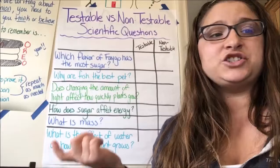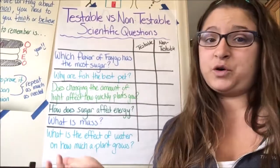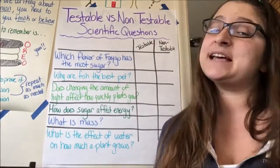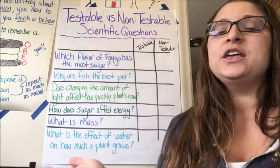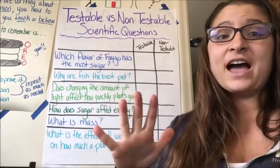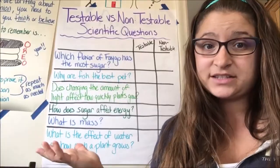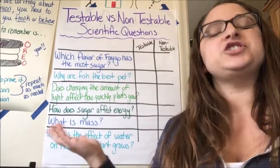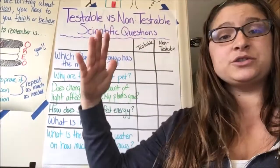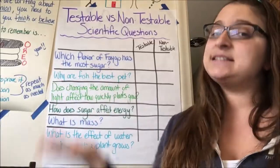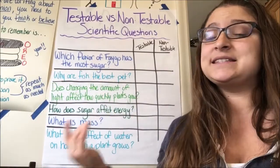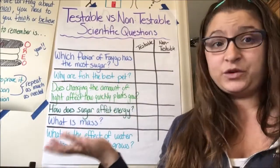How about: does changing the amount of light affect the growth rate of plants? Could you test that? Yes, you can. You can change whether you give it one hour of light, five hours of light, or 24 hours of light. You could change how much light and measure how much the plants are growing. A testable question is something you can design an experiment around and test to see if it would really work.